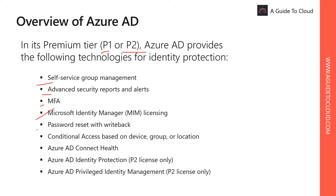Azure AD password reset with writeback is a self-service password reset that follows the Azure AD on-premises password policy. Conditional access based on devices, group, and location lets you configure conditional access for critical resources based on multiple criteria.